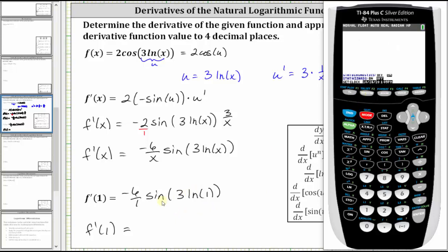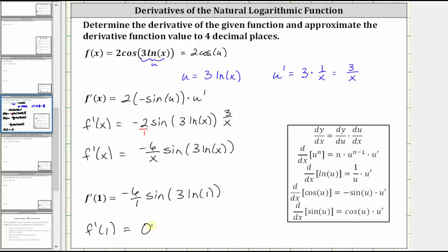Go back to the home screen. And for f prime of one, we enter negative six times sine of three natural log one, close parenthesis, close parenthesis, and enter, and we do get zero. I hope you found this helpful.